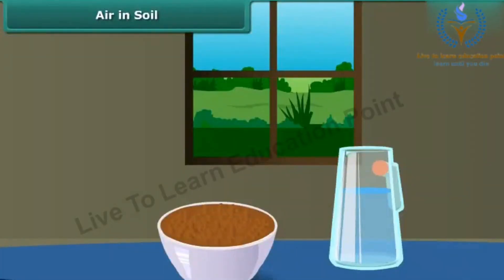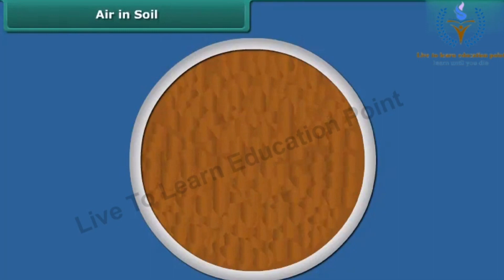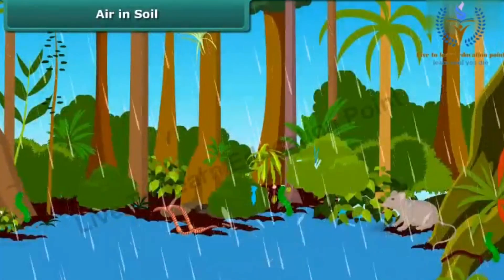How do organisms living in soil get oxygen? Take some soil in a bowl and pour some water on it. You can see air bubbles coming out of the soil. When water is added to the soil, it replaces the air present in the soil, and that air comes out as bubbles. The organisms living in burrows and holes of the soil use this trapped air to breathe.